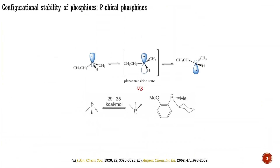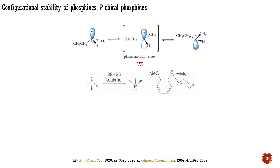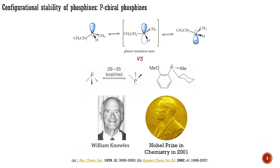An amine containing three different substituents will consist of a racemic mixture of conformers in solution, but most phosphines containing three different substituents can be prepared in an optically active form. This is largely because the barrier to inversion at phosphorus is much higher than at nitrogen, typically ranging from 29 to 35 kilocalories per mole. P-chiral phosphines can be resolved and stored indefinitely as pure enantiomers. William Knowles, a laureate of the Nobel Prize in Chemistry for asymmetric hydrogenations, did most of his studies on P-chiral phosphines.